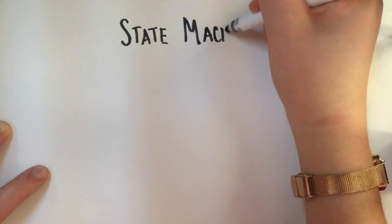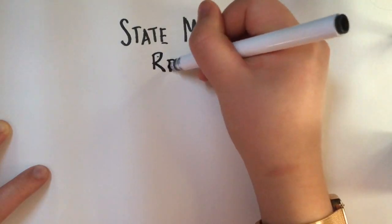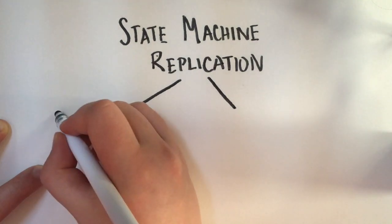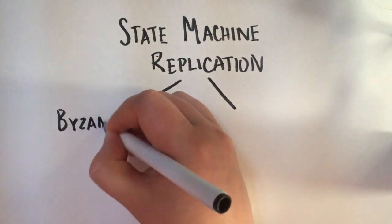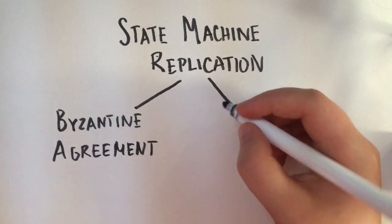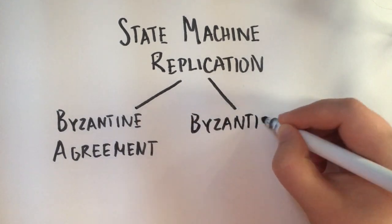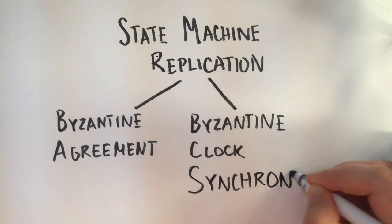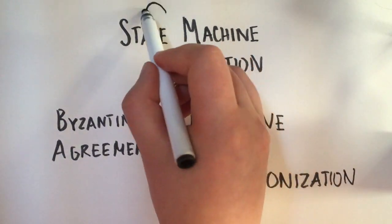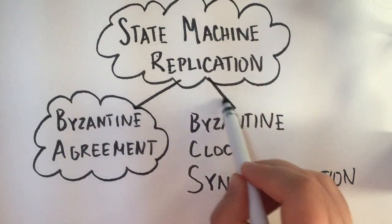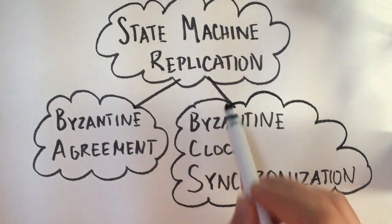Lamport also introduced another important idea called state machine replication. He explained that in order to synchronize multiple processes, each process must know all of the commands and thus resulting states issued by all of the other processes. SMR paved the way for later work on Byzantine agreement and Byzantine clock synchronization protocols. These concepts are essential for designing fault-tolerant systems that can operate correctly, even if some individual components fail.